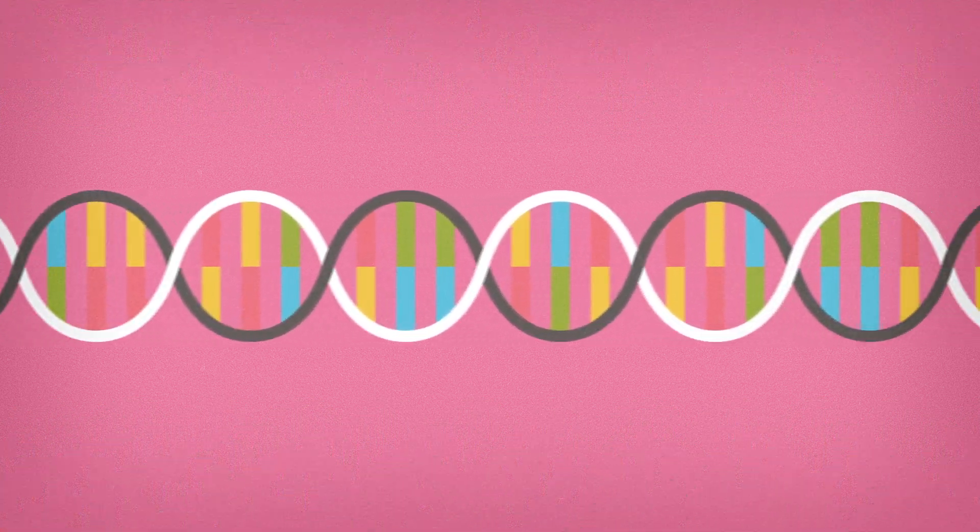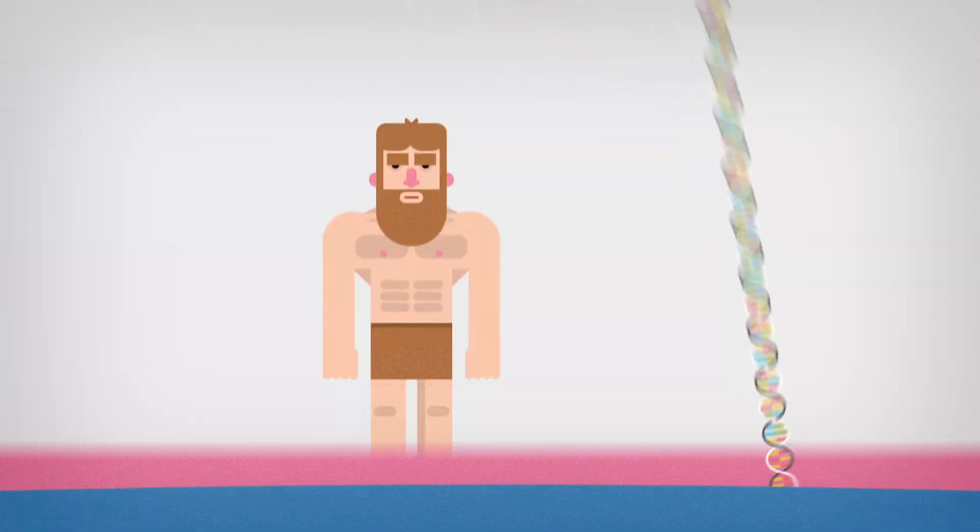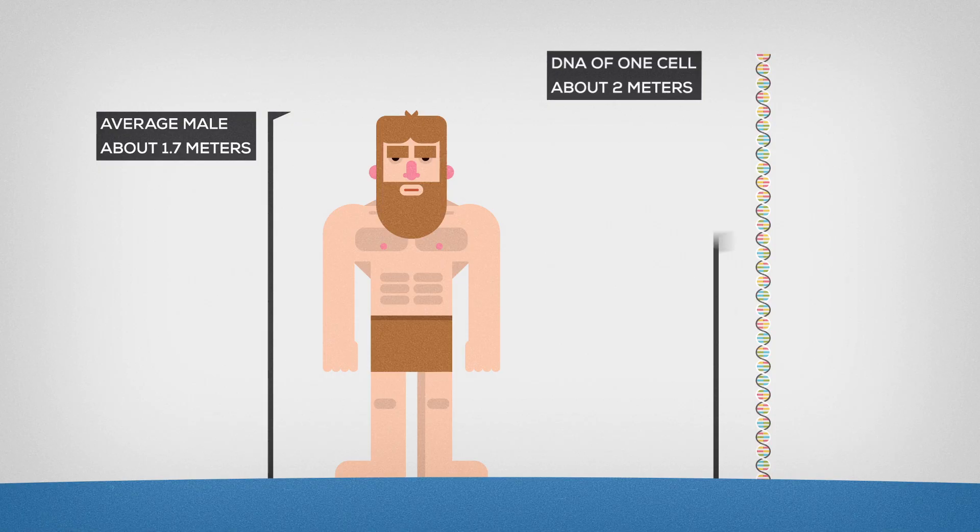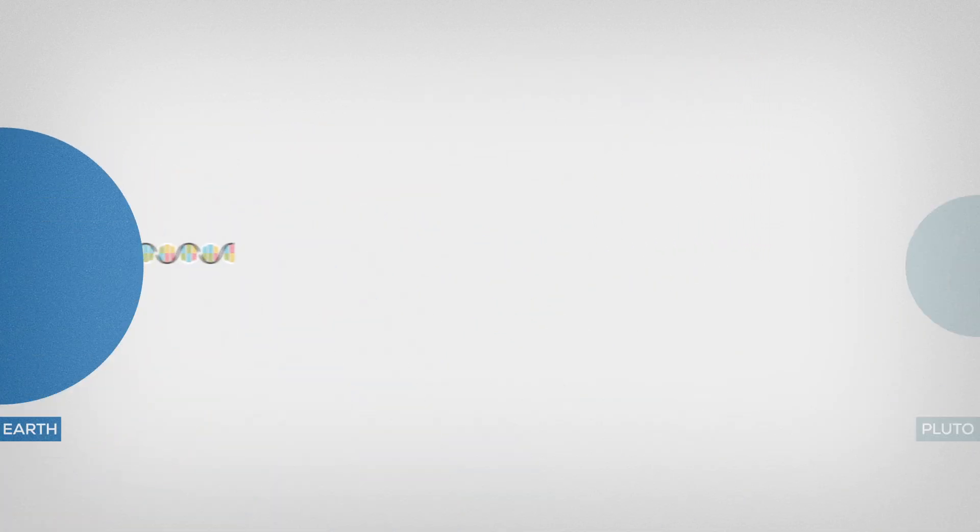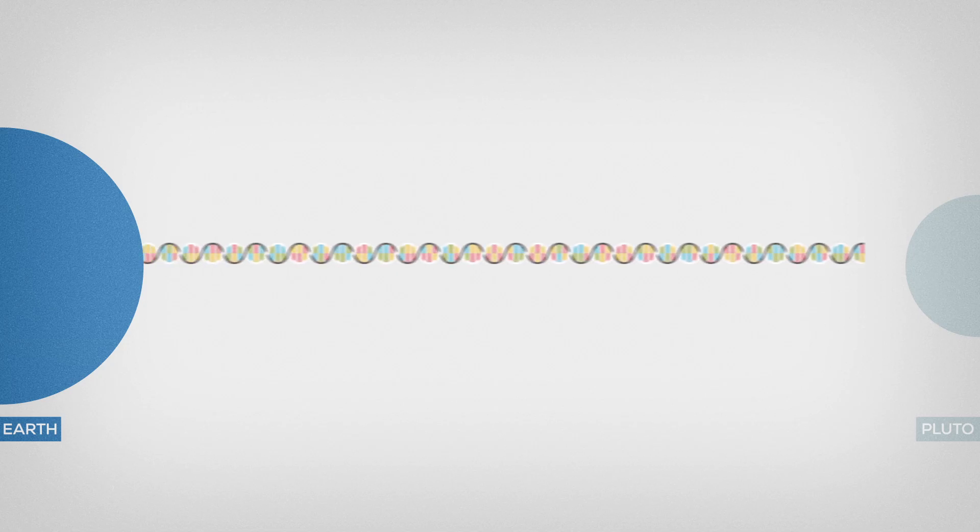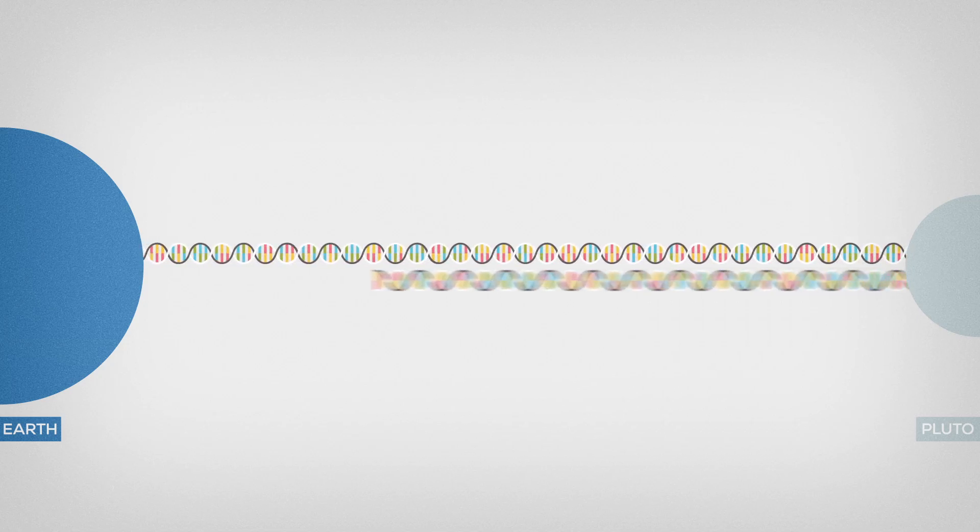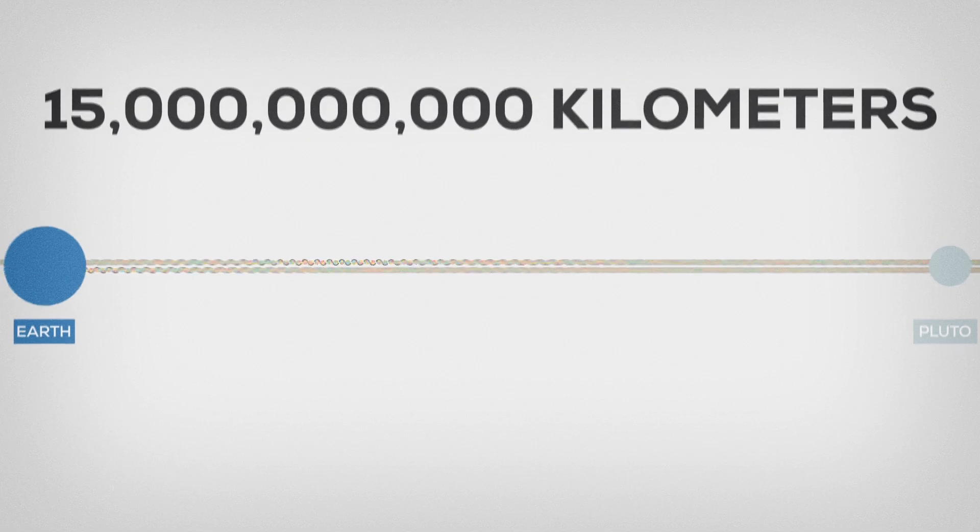The basic information for you is stored in the DNA. A molecule that encodes the genetic instructions used in the development and functioning of all known living things. If you were to unravel it, it would be 2 meters long. If you combined all the little DNA strings in all your cells, you'd get a string so long that it would stretch to Pluto and back to Earth. That's pretty long.